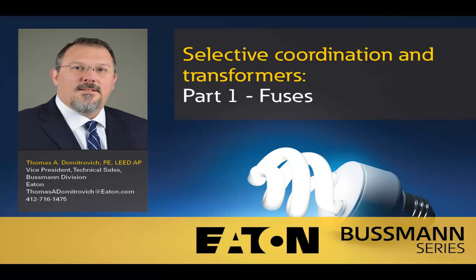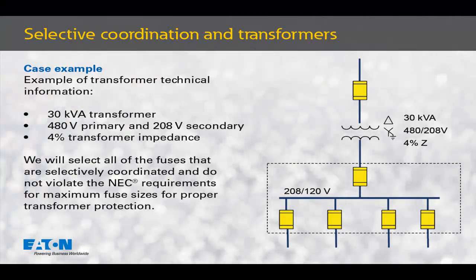Hello, my name is Thomas Dmitrovich. In this session, we're going to talk about how to selectively coordinate fuses for a transformer application. The example we'll use is a 30 kVA transformer with a 480 volt line-to-line primary voltage and a 208 volt line-to-line secondary voltage. We will select all of the fuses that you see here to properly protect this transformer and achieve a selectively coordinated system.